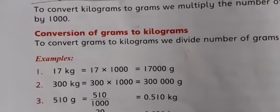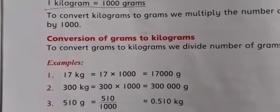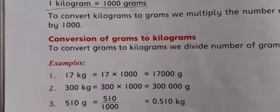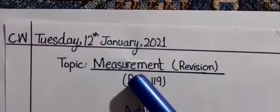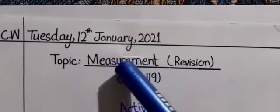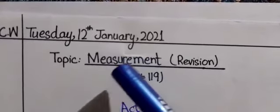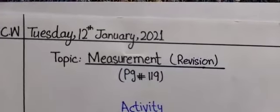Let's move toward our copy work. Open your notebooks, write the date and day. Today is Tuesday, 12 January 2021. I have written: CW, Tuesday 12 January 2021. Our topic is Measurement — we are doing revision of page number 119. Measurement means to measure, and we have also learned the definition of the metric system, which depends on multiples of ten.